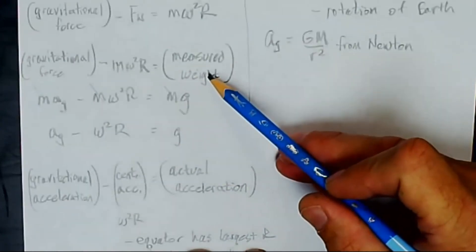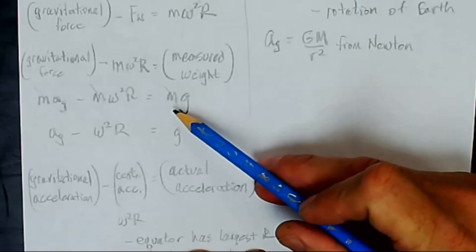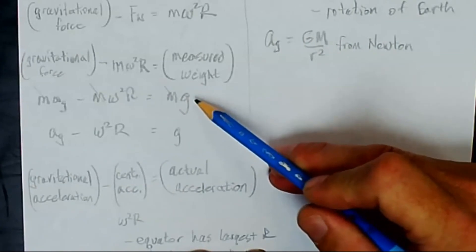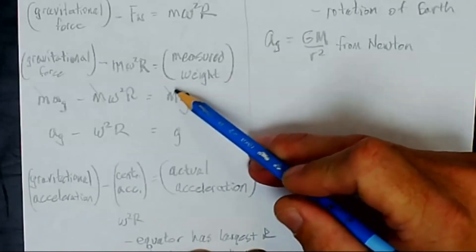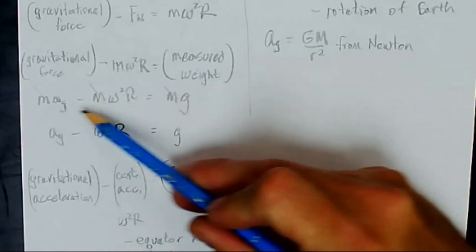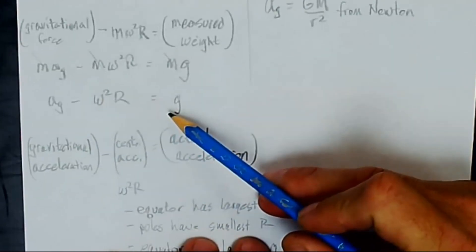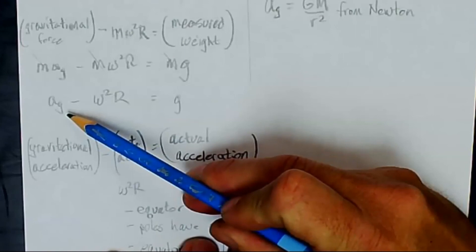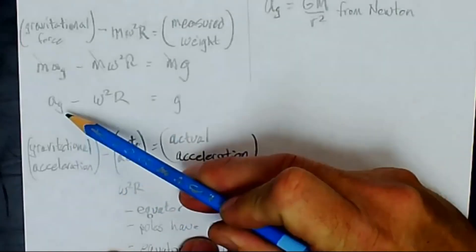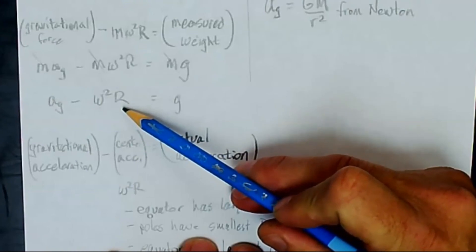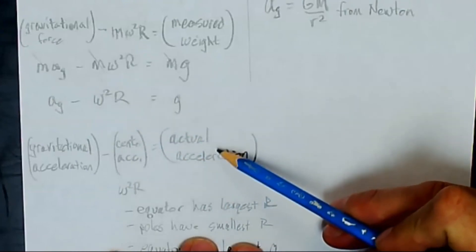My measured weight, I know, is mass times the acceleration of gravity as measured in that region. So I'll call the measured weight mg. You see, every term has an m, so it cancels out, and I'm left with this equation here that is telling me the calculated gravitational acceleration minus the centripetal acceleration is equal to the actual acceleration.